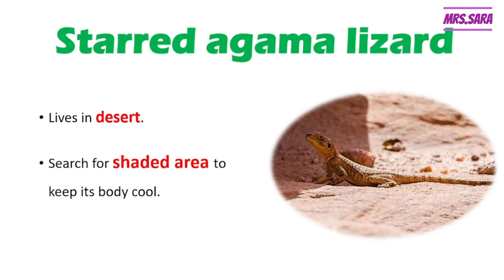Our first example, Primary 4, is the Stout Agama Lizard. The Stout Agama Lizard lives in the desert, and you know that the weather in the desert is very hot. So to adapt to living in this weather, the Stout Agama Lizard searches for a shaded area — like this part here, this is a shaded area — to keep its body cool from the hot climate.